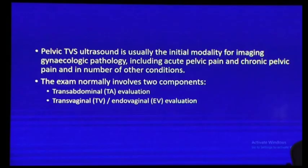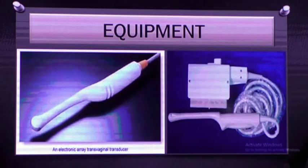What is the role of TVS in pelvic ultrasound? Pelvic ultrasound is usually the initial imaging modality for gynecological pathology including acute or chronic pain. It is usually complemented with transabdominal ultrasound. The probe used is an electronic array probe — almost every vendor has a similar appearance with slight variation. It has a certain length which is introduced into the vagina to visualize the uterus.